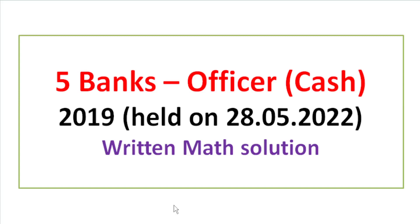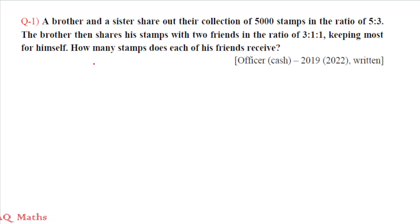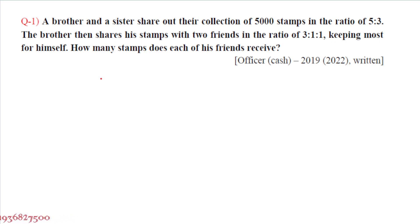Assalamu alaikum, welcome to the written math solution of Five Banks Officer Cash 2019, held on May 28, 2022. Question number one: a brother and a sister share out their collection of 5,000 stamps in the ratio of 5 to 3. The brother then shares his stamps with two friends in the ratio of 3 to 1 to 1, keeping most for himself. How many stamps does each of his friends receive?